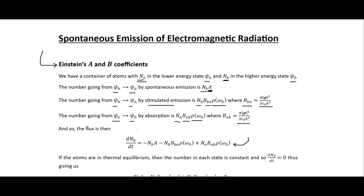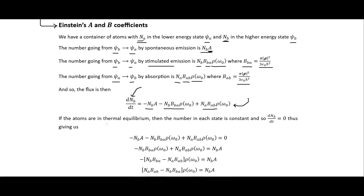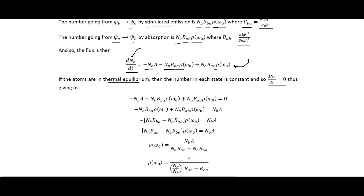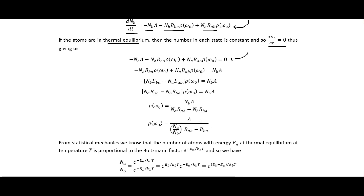The flux is given by a differential equation where the change in the number of particles in the higher state equals the loss terms (negative) from the higher state and the gain term (positive) into the higher state. If the atoms are in thermal equilibrium, the number in each state is constant, so this rate will be zero — the change in the number of atoms in the upper state with time is zero.